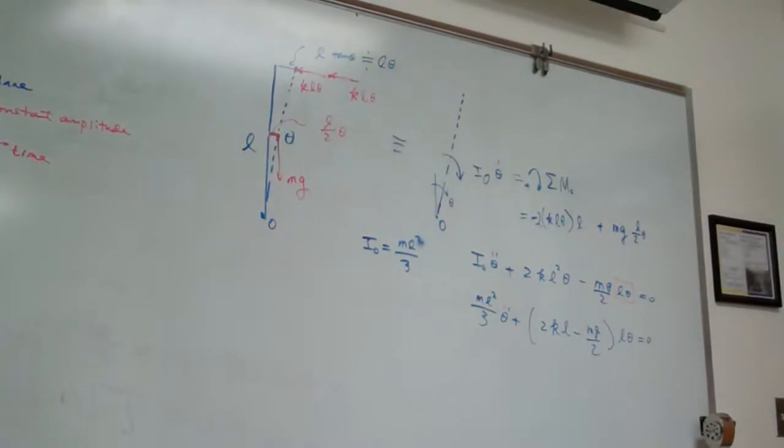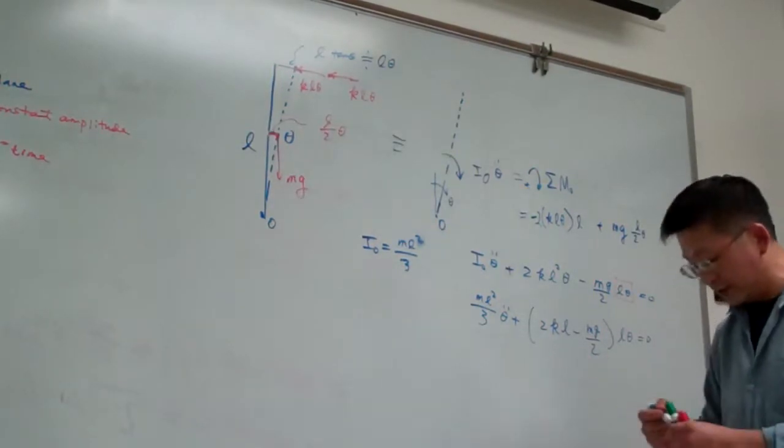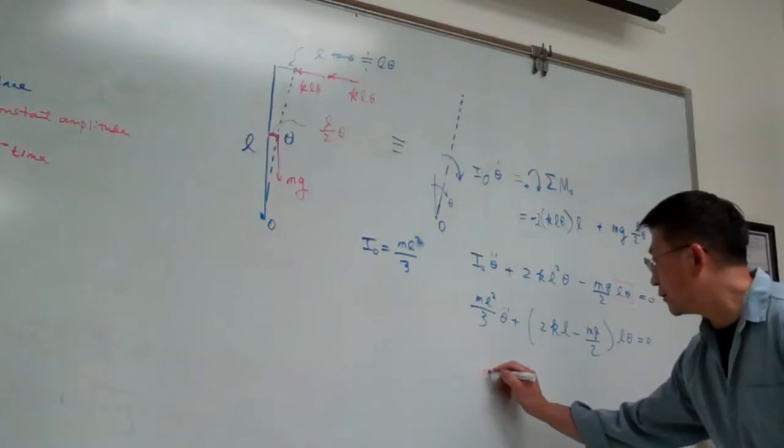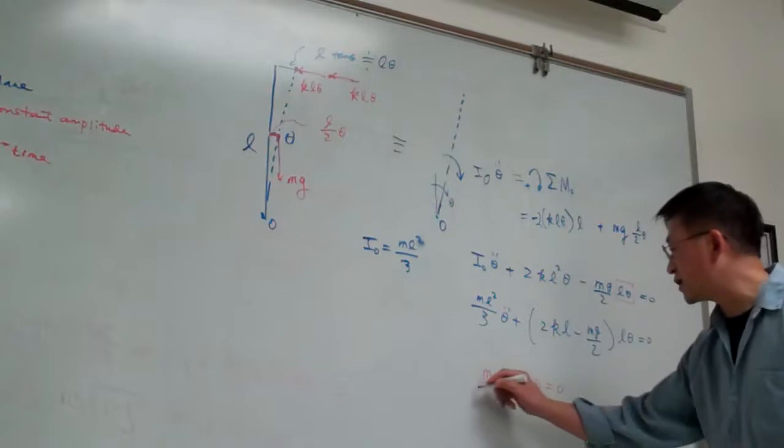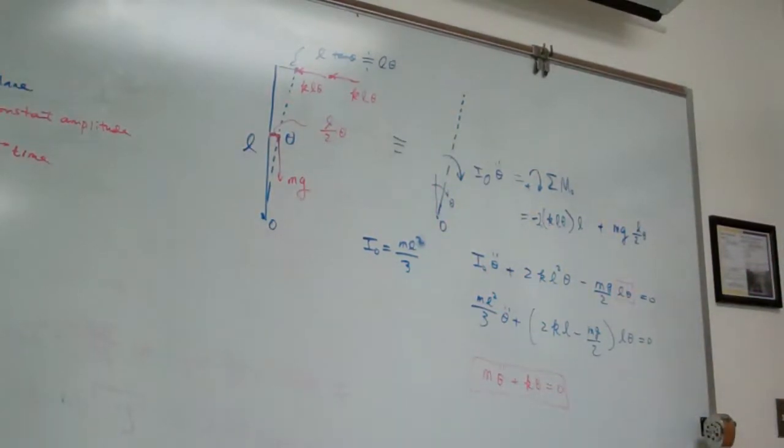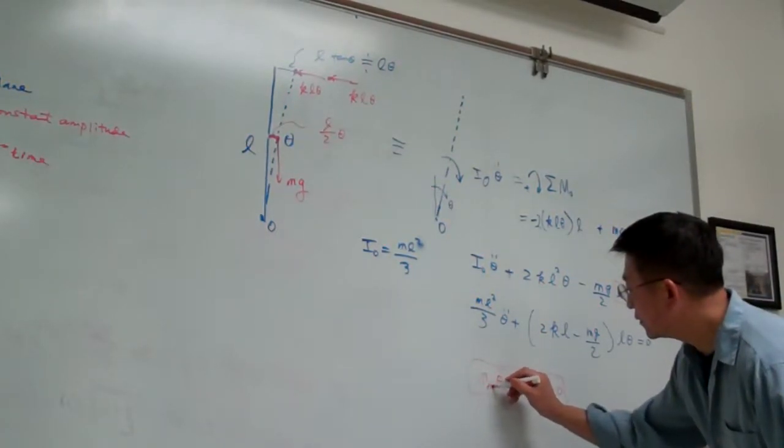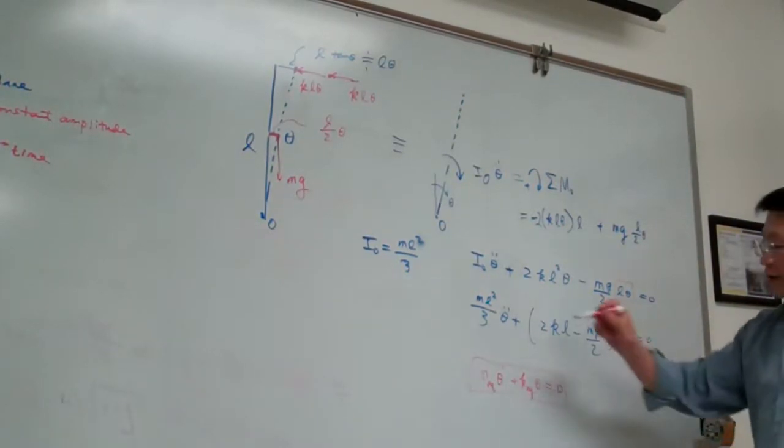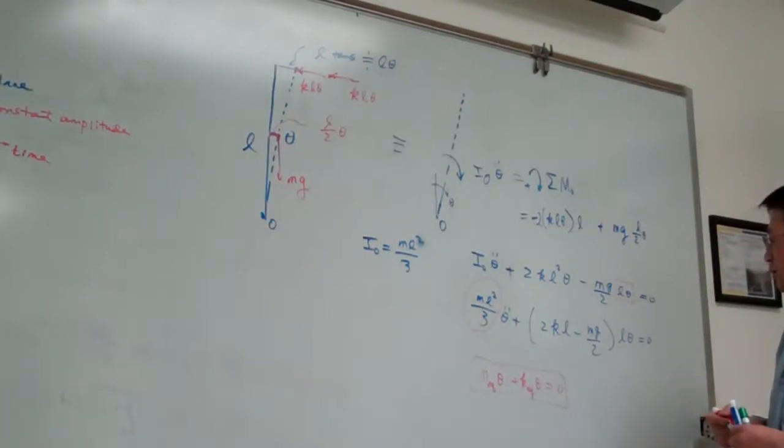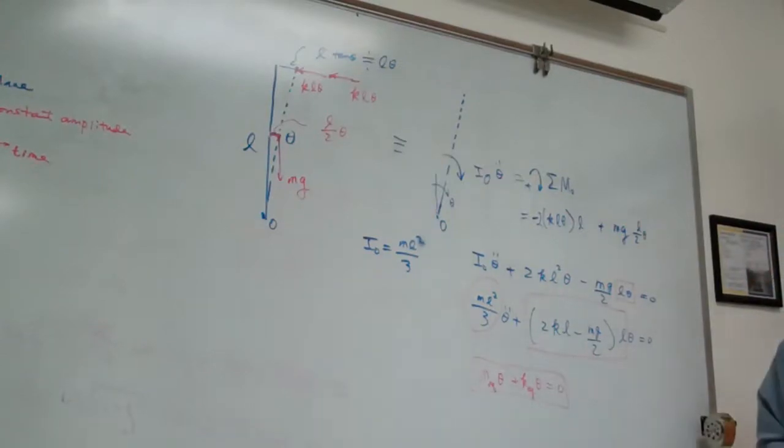That really depends on the numbers here. Let me put this into the template: M_eq theta double dot plus K_eq theta equals zero, this is our template. Compared to this one, let me use M_eq and K_eq. So this is our M_eq, and our K_eq is this one.